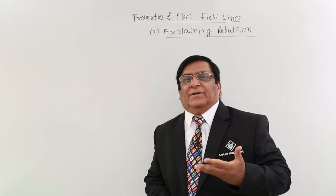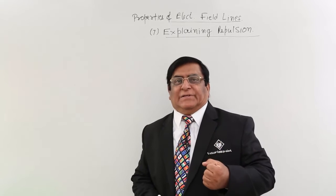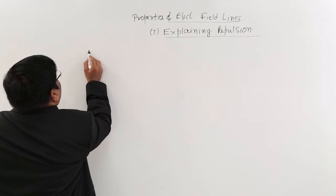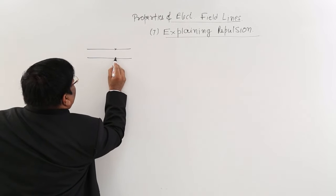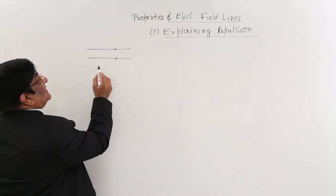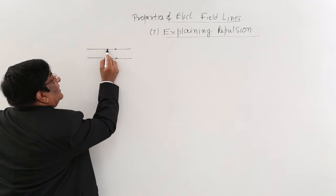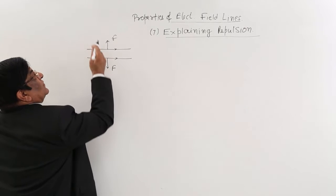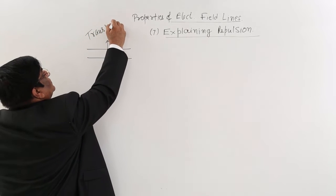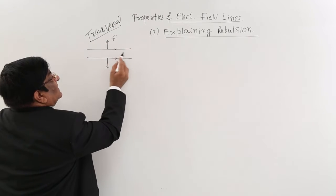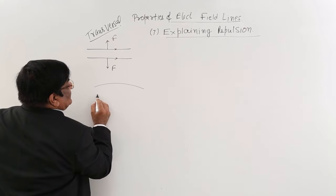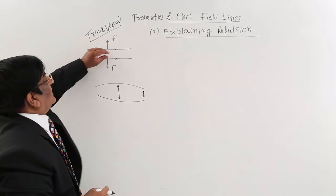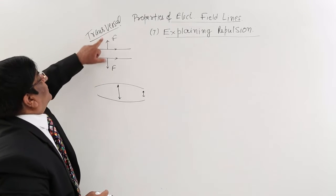Now, how do we explain repulsion on the basis of electric field lines? For that we should know the shape of electric field lines and one principle. The principle is that if there are two electric field lines going in the same direction, they always repel each other transversely — this field line will push the other one this way, and that line will push this way. This direction is normal, so we call this force transversal. Because of this transversal force, the lines spread apart — the distance between them becomes larger. They do not like each other and apply a force of repulsion.